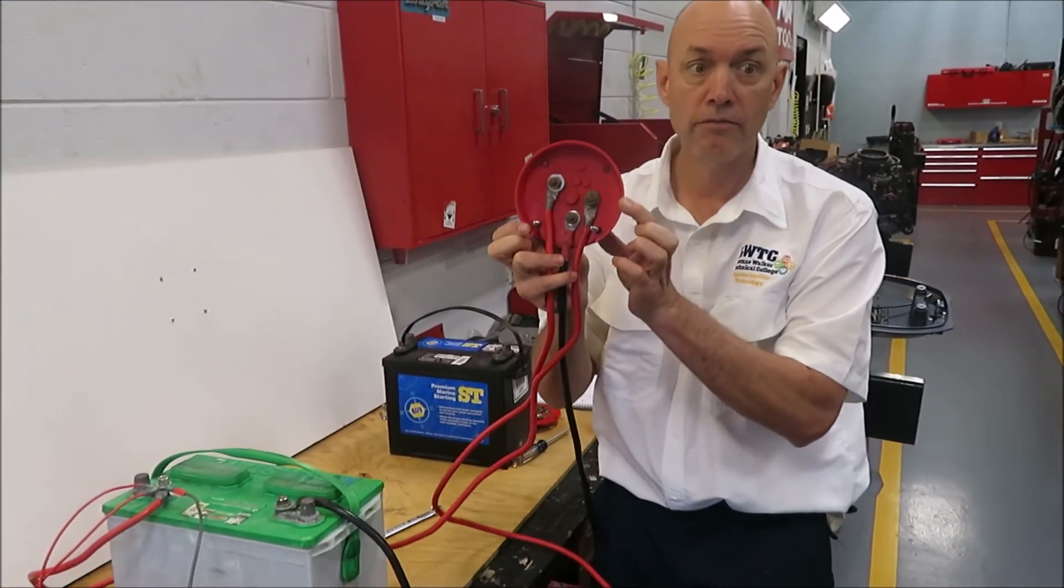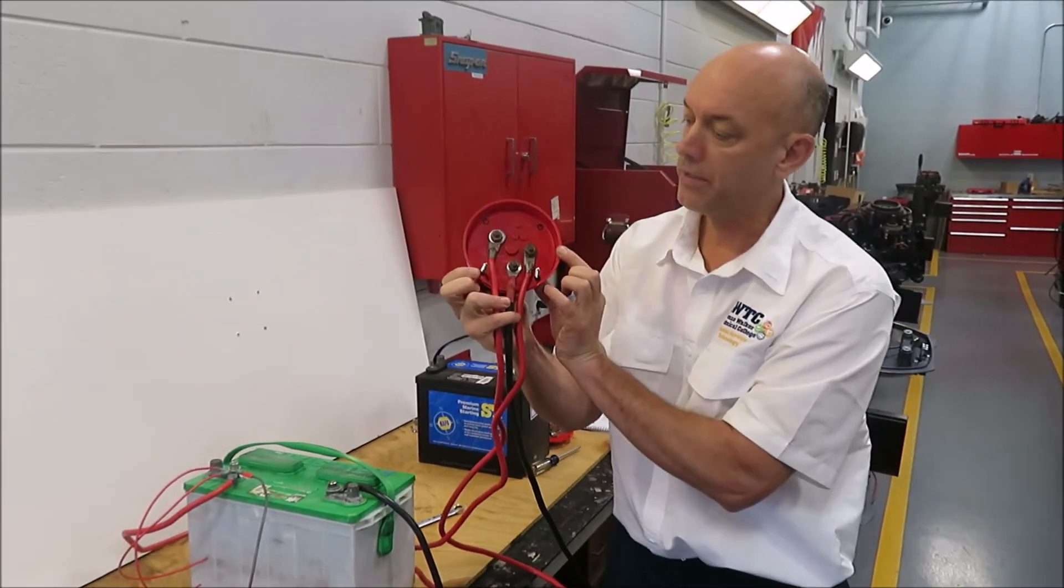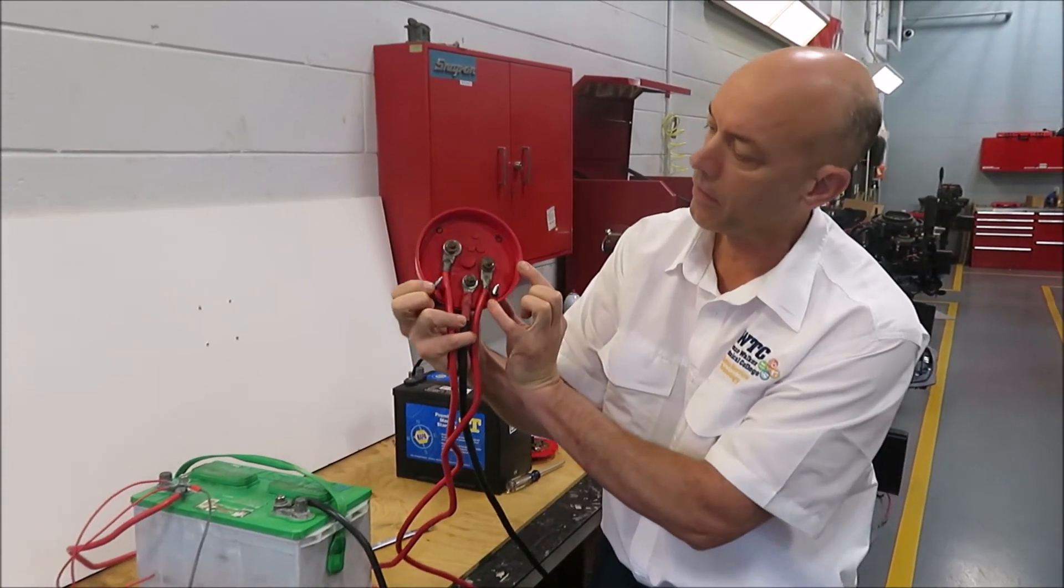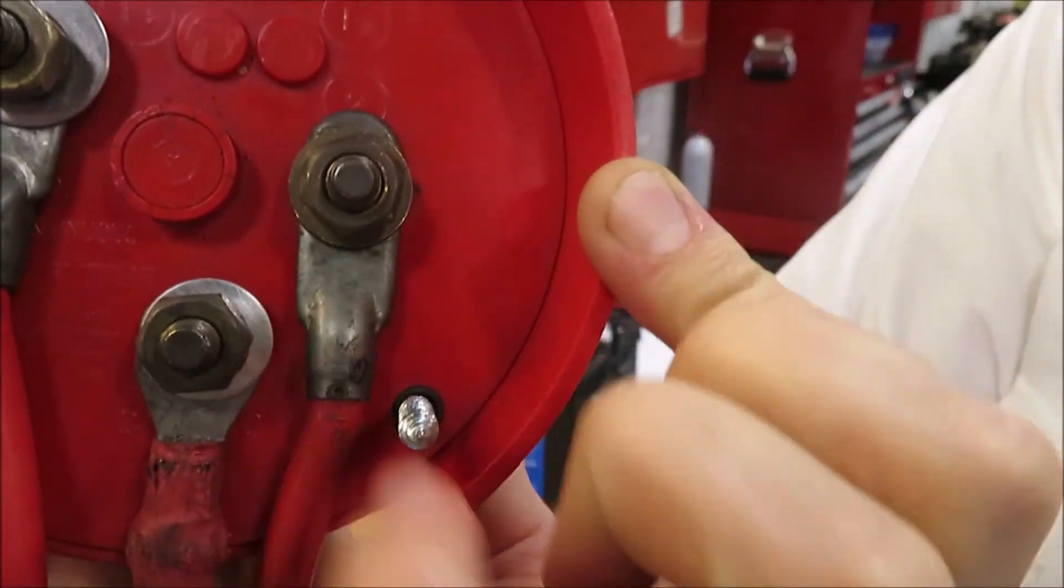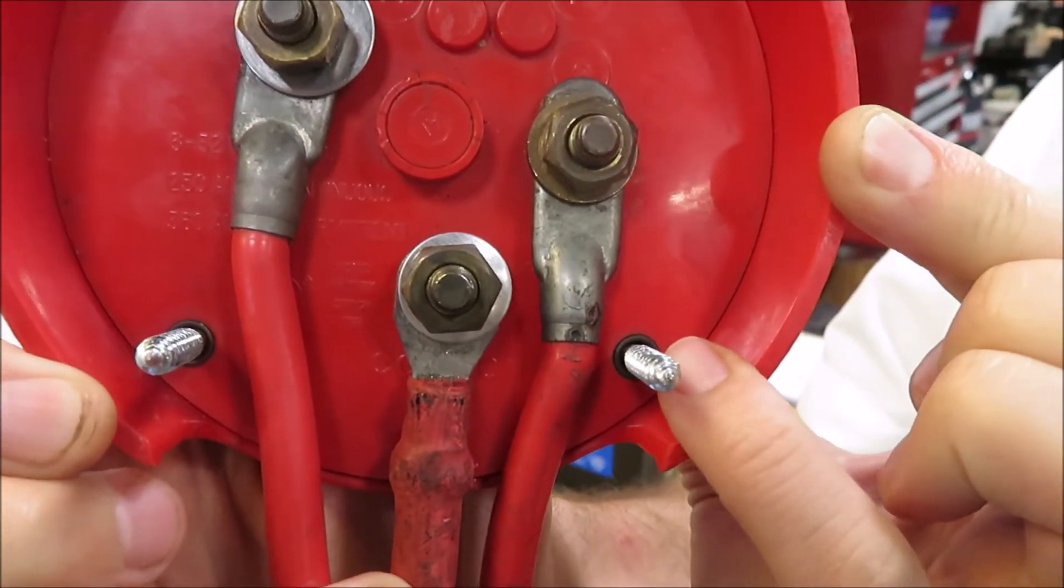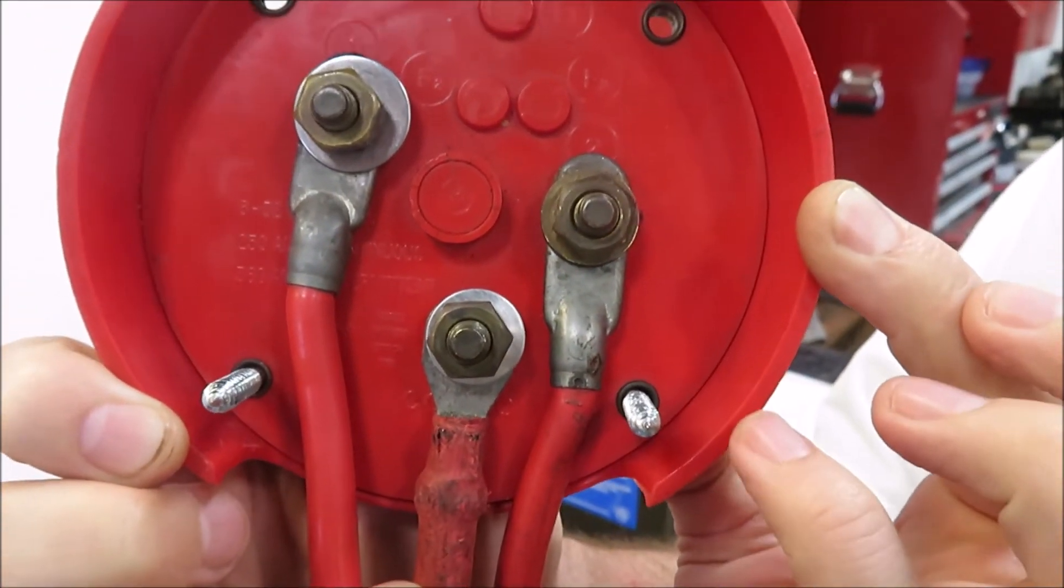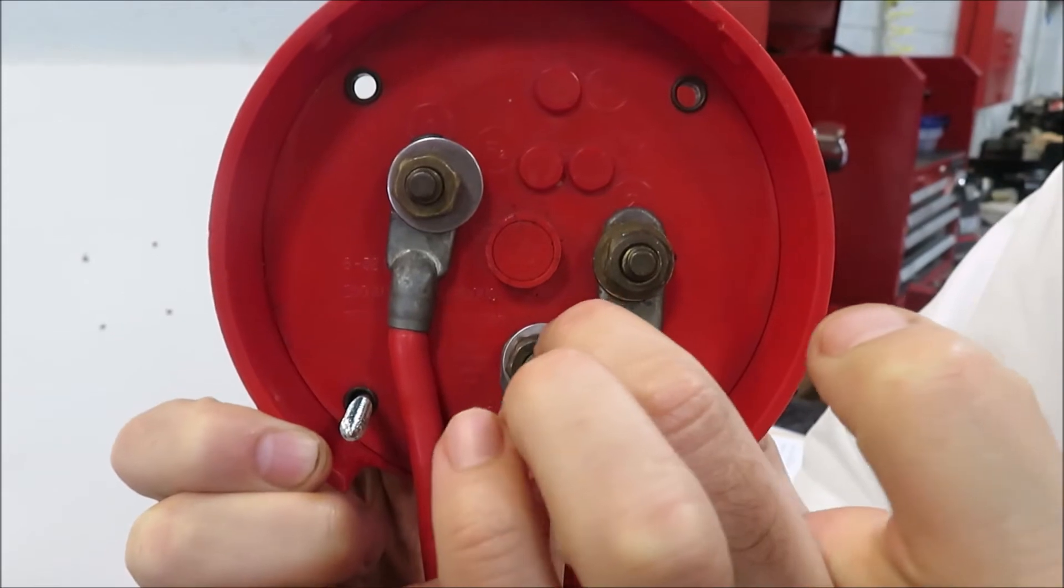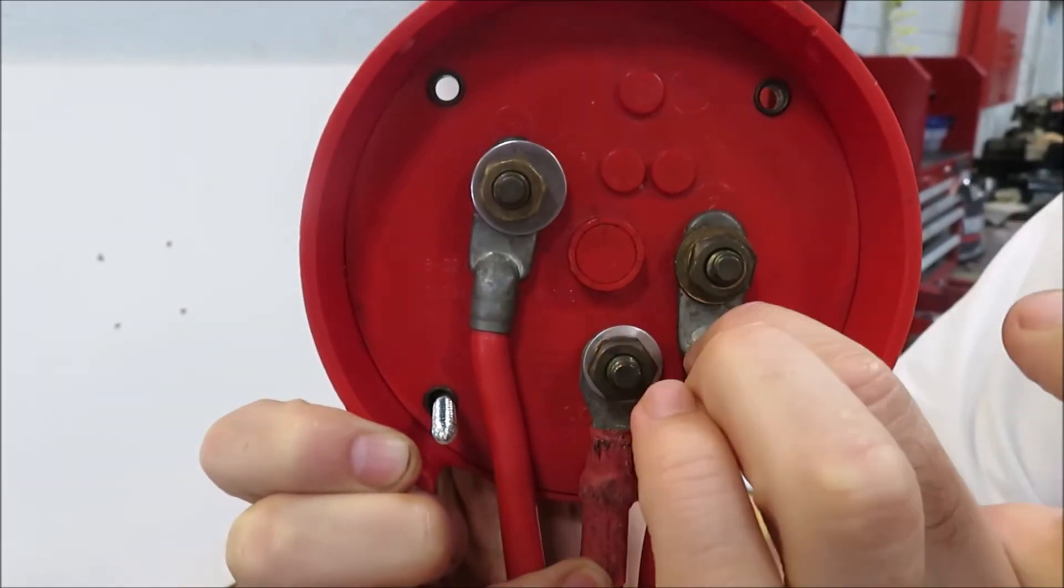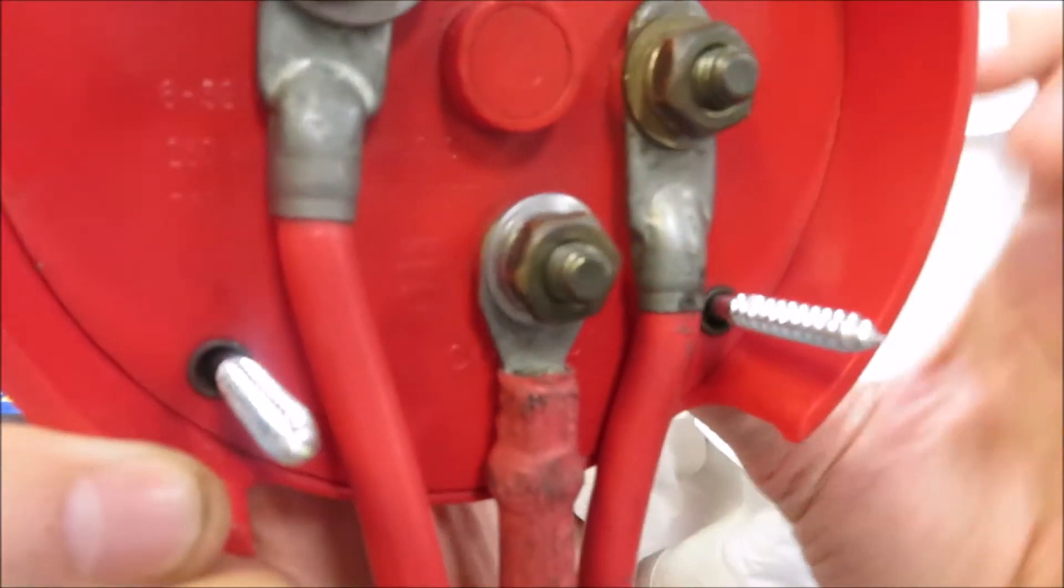So one of the things to be careful of when you're making your attachments is to make sure that the terminal end isn't contacting your mounting screw on either side, because that will cause a short. And you also want to make sure that this isn't coming around and potentially touching there, or then you're actually bypassing the switch.